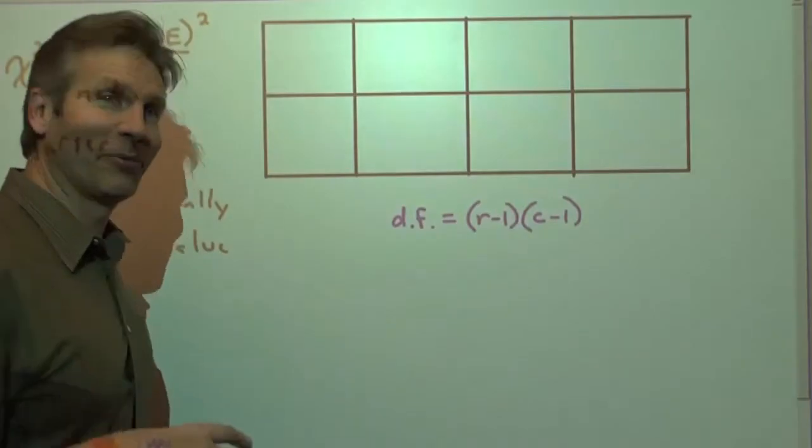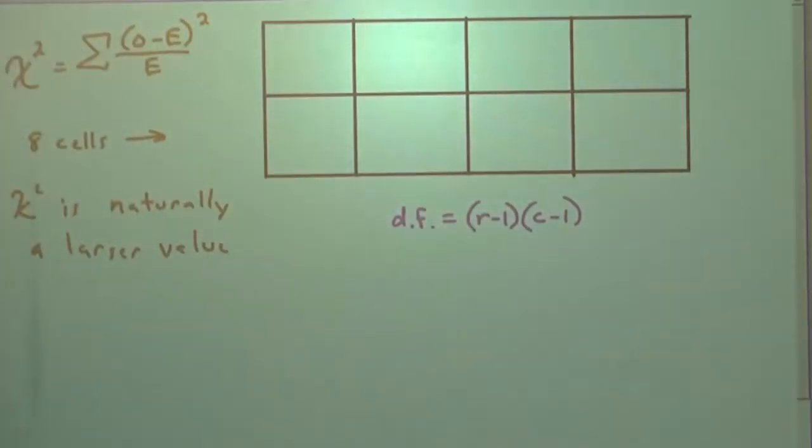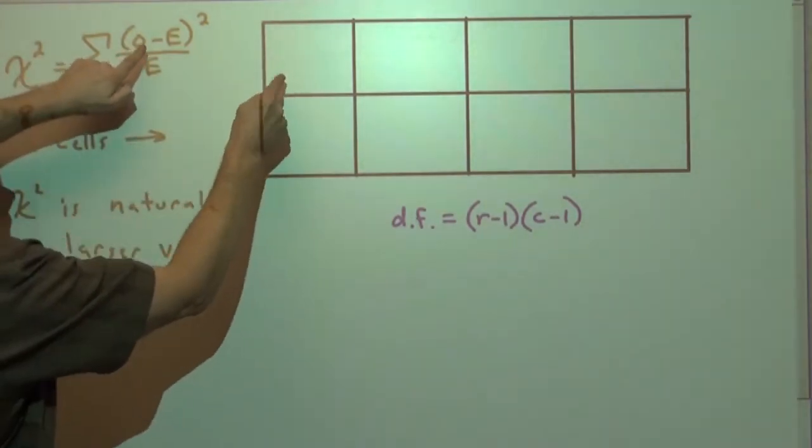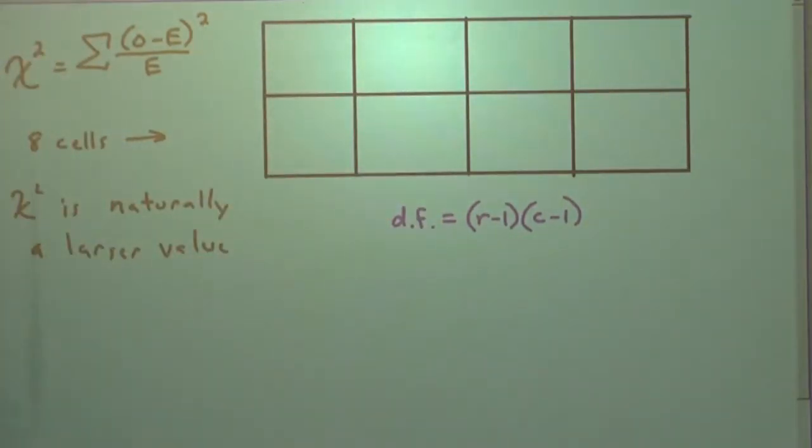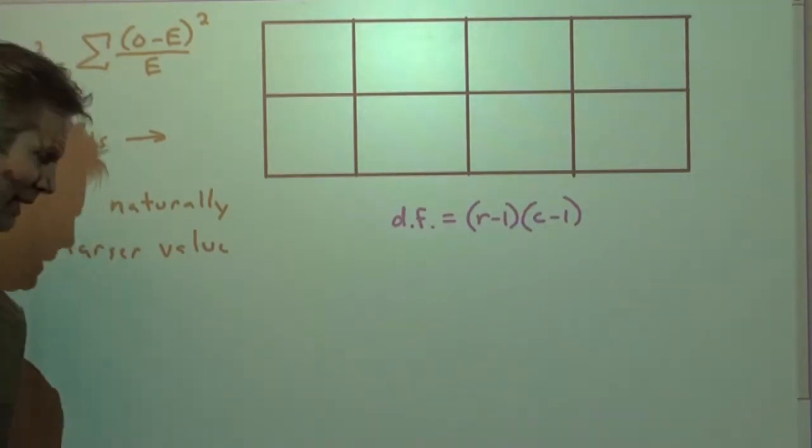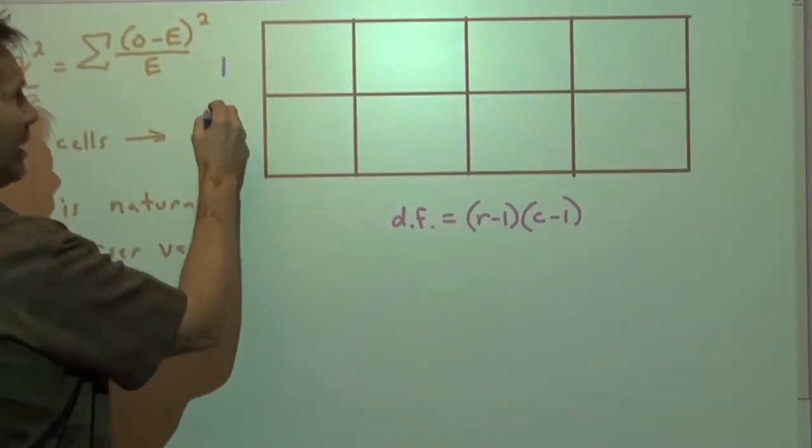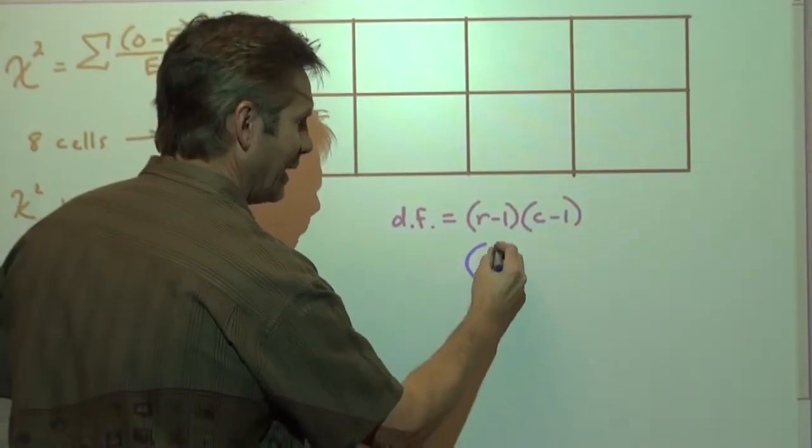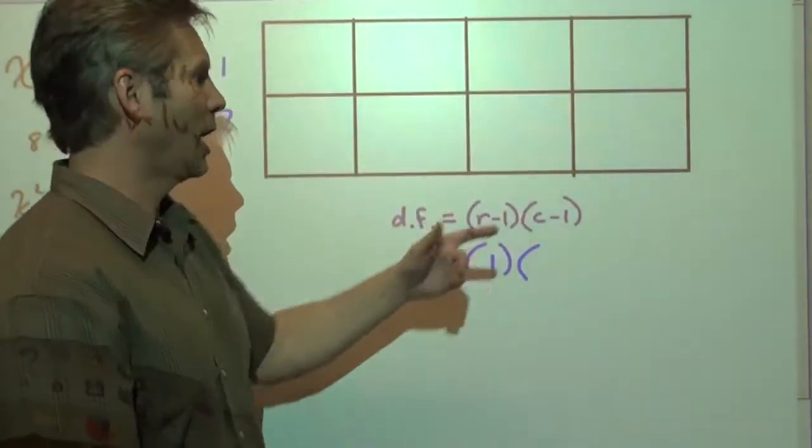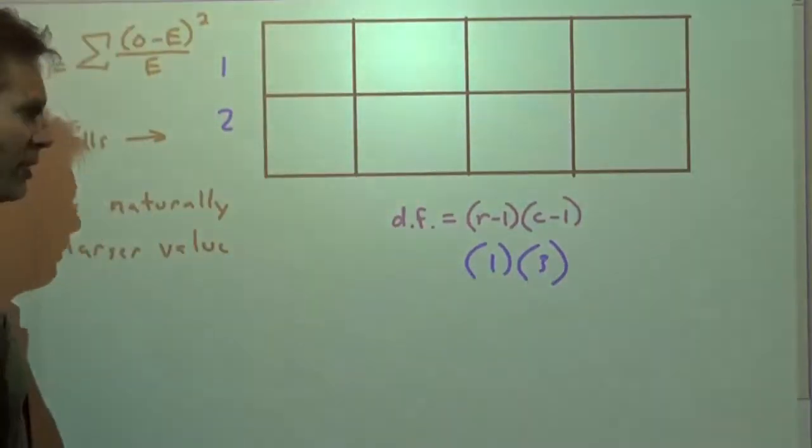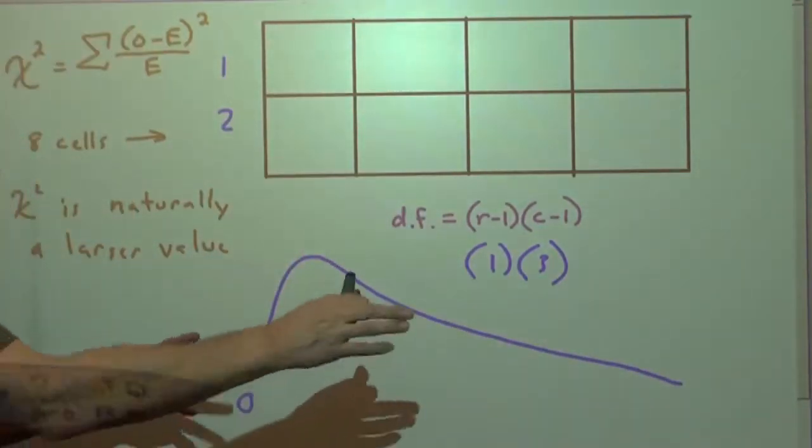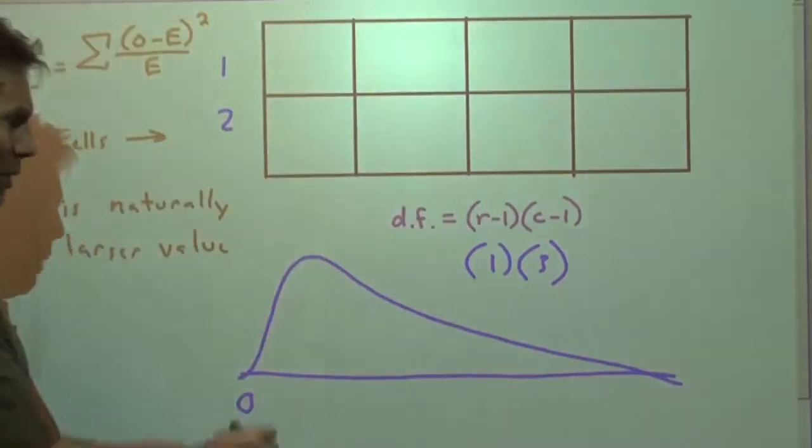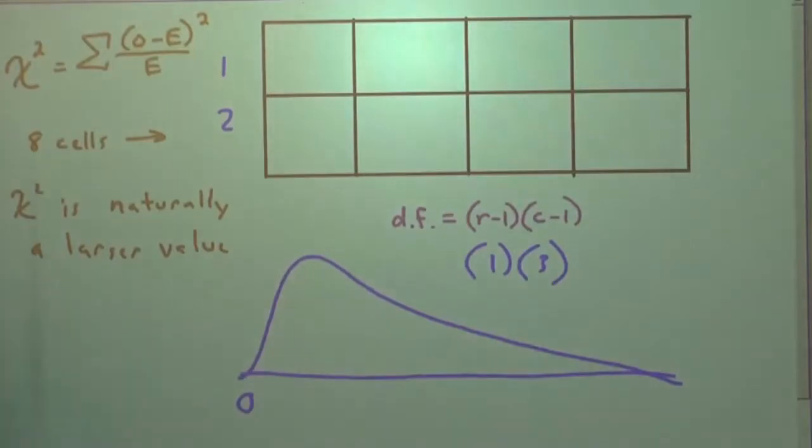Now, what if you had more cells? We launched a bunch of frogs. They could be in any one of these cells. Well, what happens if you think about it, since every cell, we're going to take observed minus expected squared about what I expected, and add them up. Now we have more cells, so naturally, chi-squared is going to get even larger. And we're going to have to find degrees of freedom like we did in the t-test.